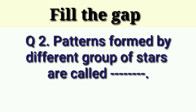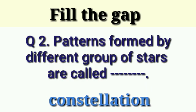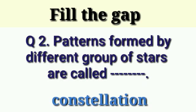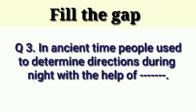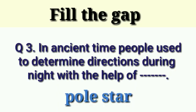Answer is: constellation. Next question: in ancient times, people used to determine directions during night with the help of dash. Answer is: pole star.